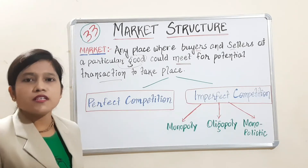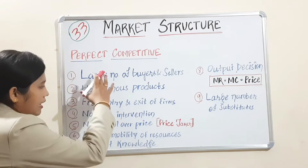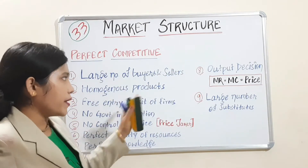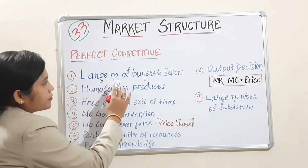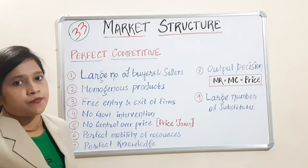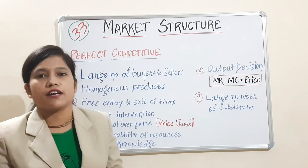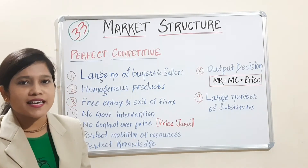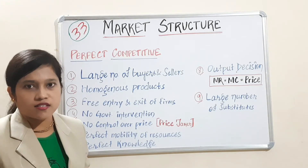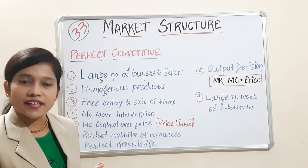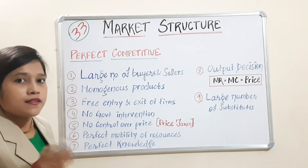First is the perfect competitive market. The first characteristic is a large number of buyers and sellers. In a market, buyers are always large in number. But in a perfect competitive market, sellers are also large in number. This means sellers cannot control anything. If one seller is doing any bias, the buyer will simply switch to another seller.